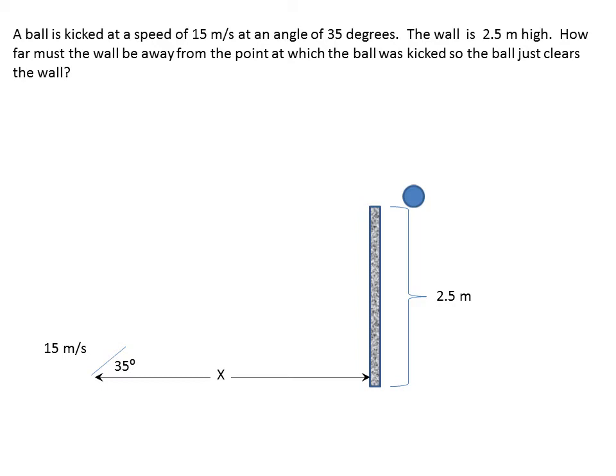Now the issue here is you cannot assume that it crosses the wall at the highest point where the y velocity is 0. You have to assume that it might be before it reaches that point or after it reaches that point. In this case, if you saw from the example, it's on its way up not on its way down.